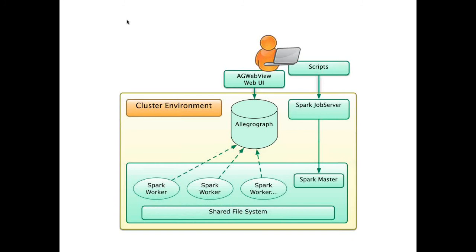baseball, basketball, and so forth. We'll be building a categorization model using the Naive Bayes algorithm. Spark and MLLib come with a number of machine learning algorithms, so we're using this as an example, but many other options are available.